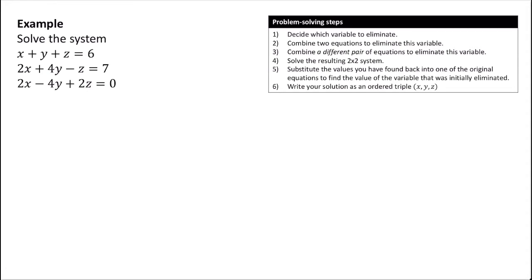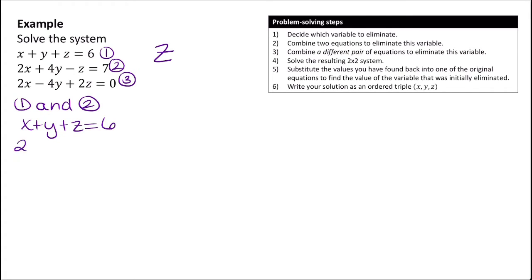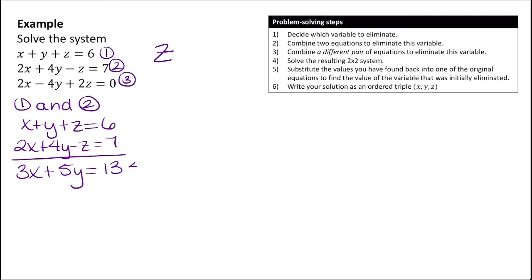Let's try solving the system. We have a three-by-three system with three equations and three variables. The first step is to decide which variable to eliminate. I'm deciding to eliminate Z because notice that in two equations, I already have equal and opposite values for the coefficients. I'll number my equations 1, 2, and 3. Combining equation 1 and equation 2: x plus y plus z equals 6, combined with 2x plus 4y minus z equals 7. Adding these together gives 3x plus 5y equals 13 — I'll call this equation 4.